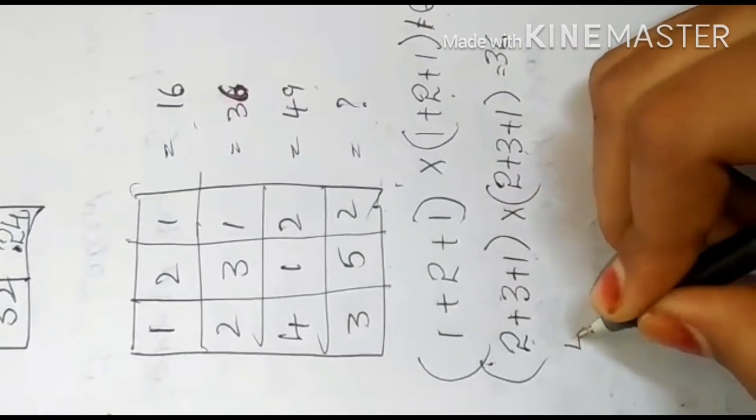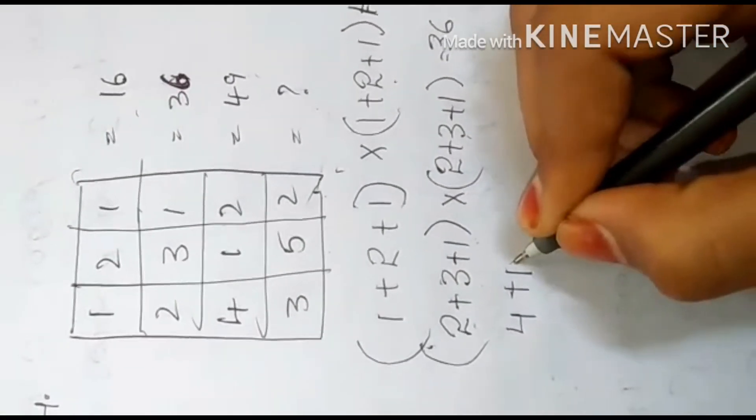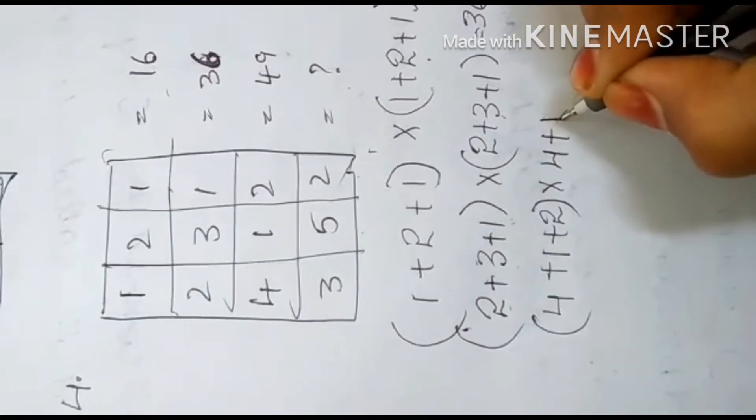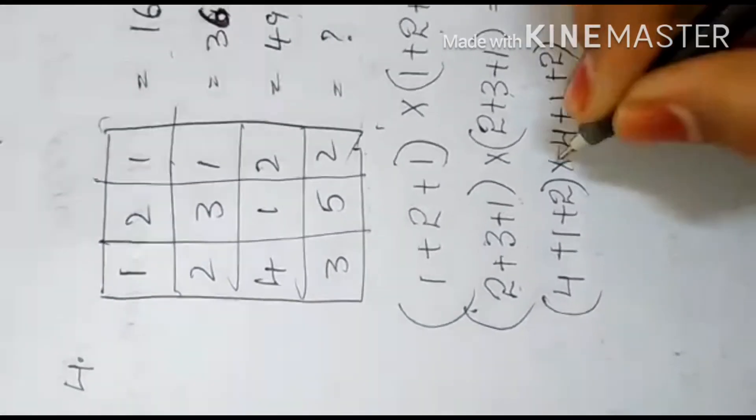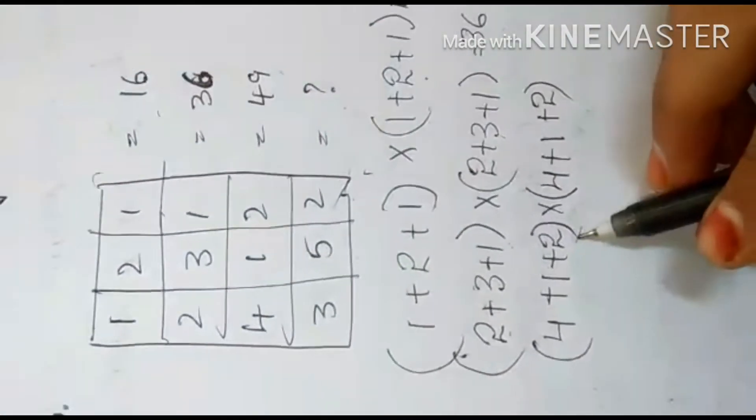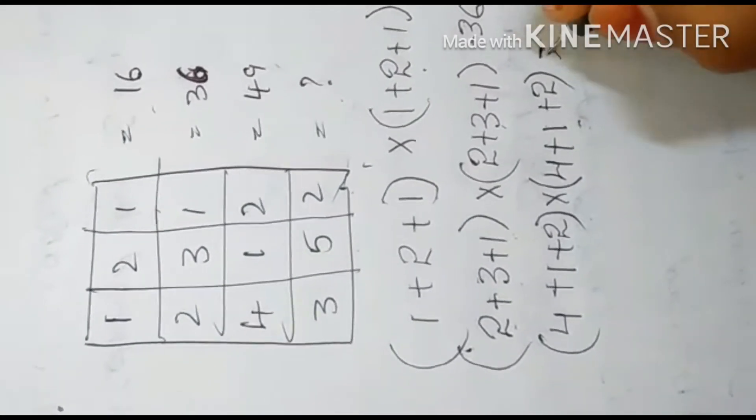And 4 plus 1 plus 2 in brackets, into 4 plus 1 plus 2 in brackets. 4 plus 1 is 5, 5 plus 2 is 7. 7 into 7 equals 49.